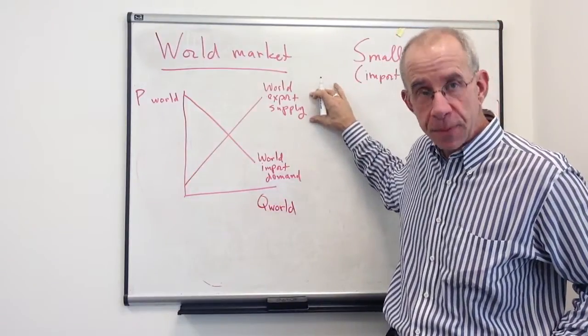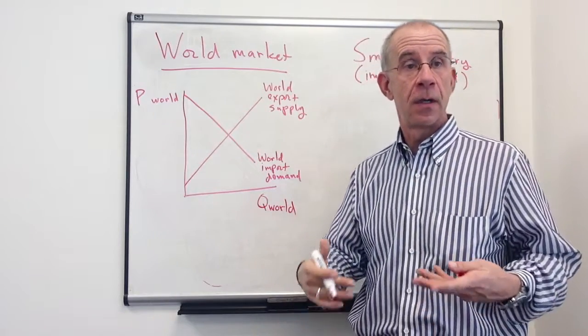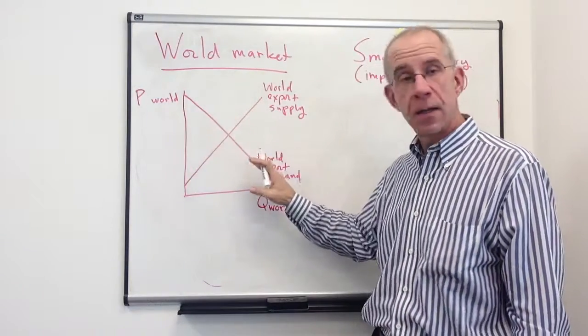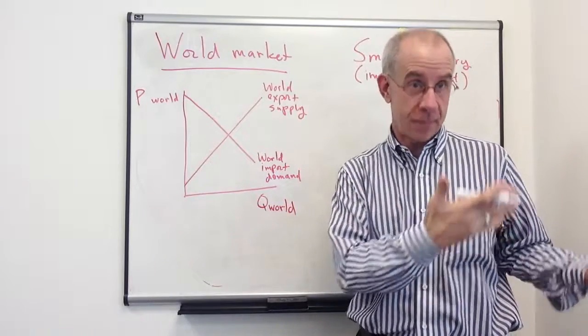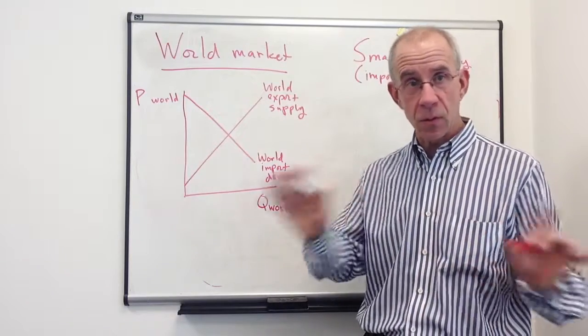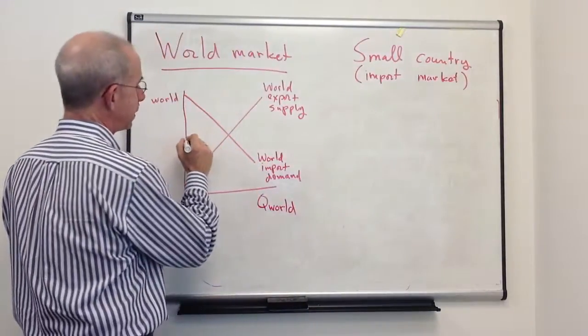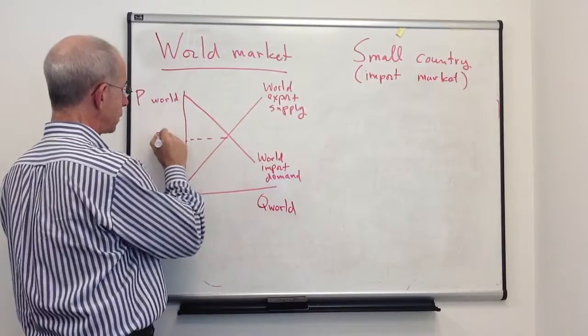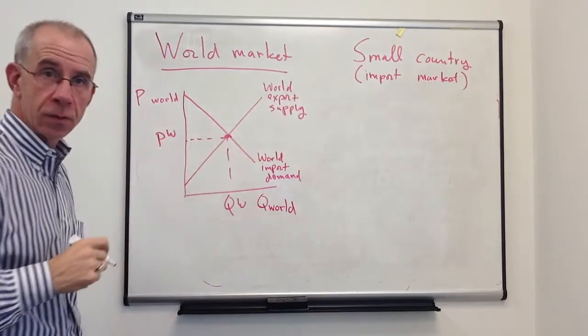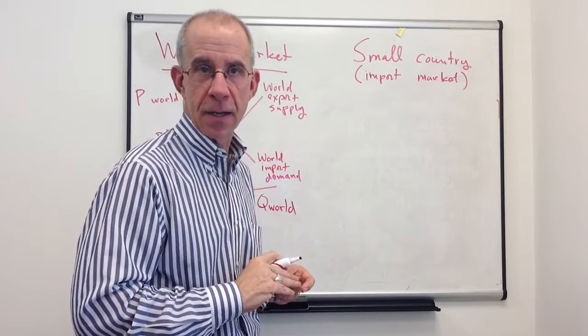We've got the export supply in the world market, in other words, how much exporters are willing to supply at different prices in the international market, and a world import demand curve, which is the amount that's going to be demanded from all sources around the world for different prices in the international market. And not surprisingly, the critical world price is going to be given by the intersection of the world supply and world demand, just simple demand and supply from an international perspective.